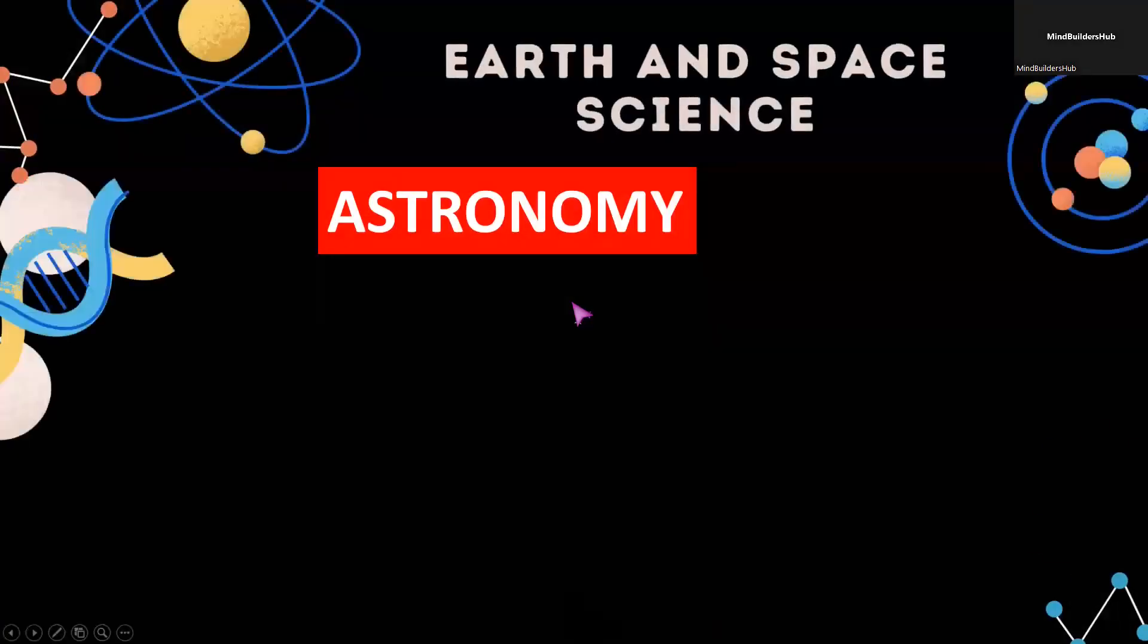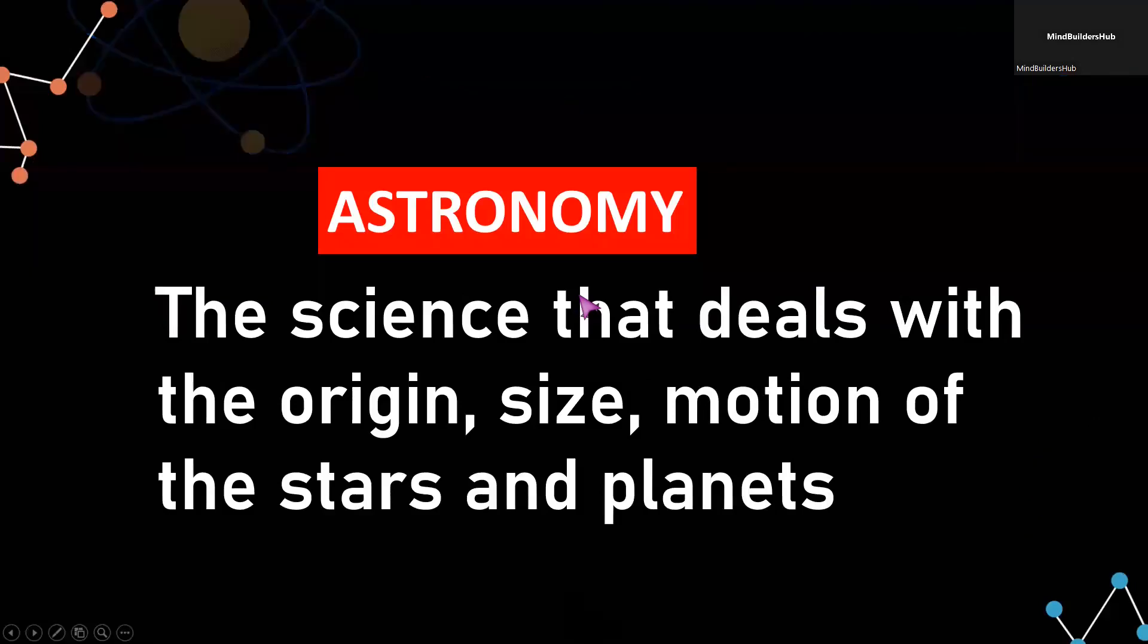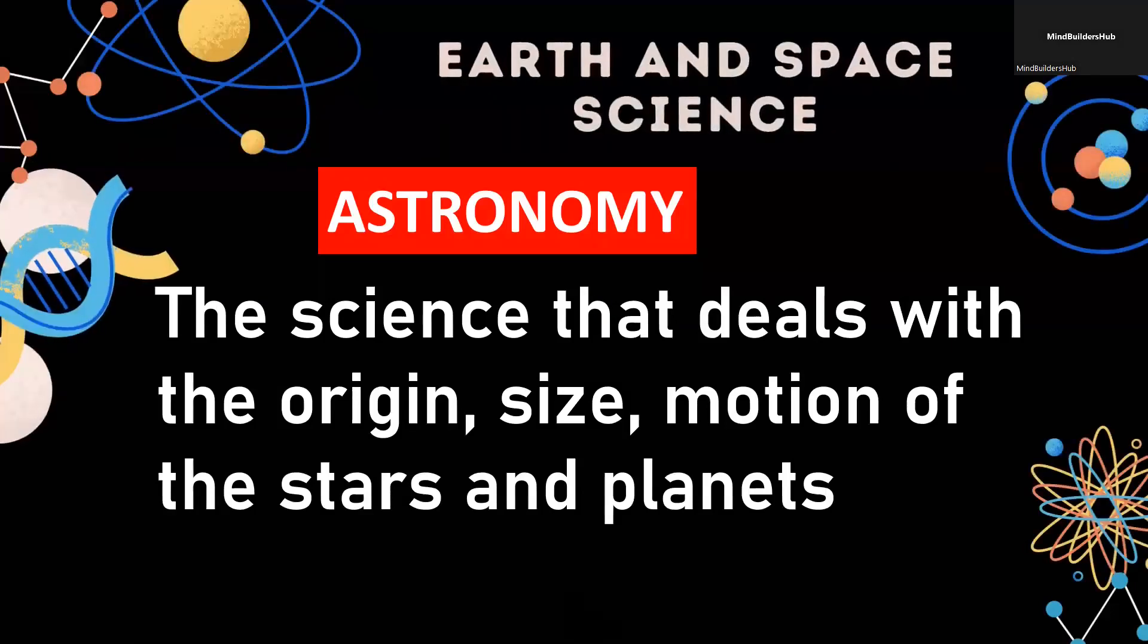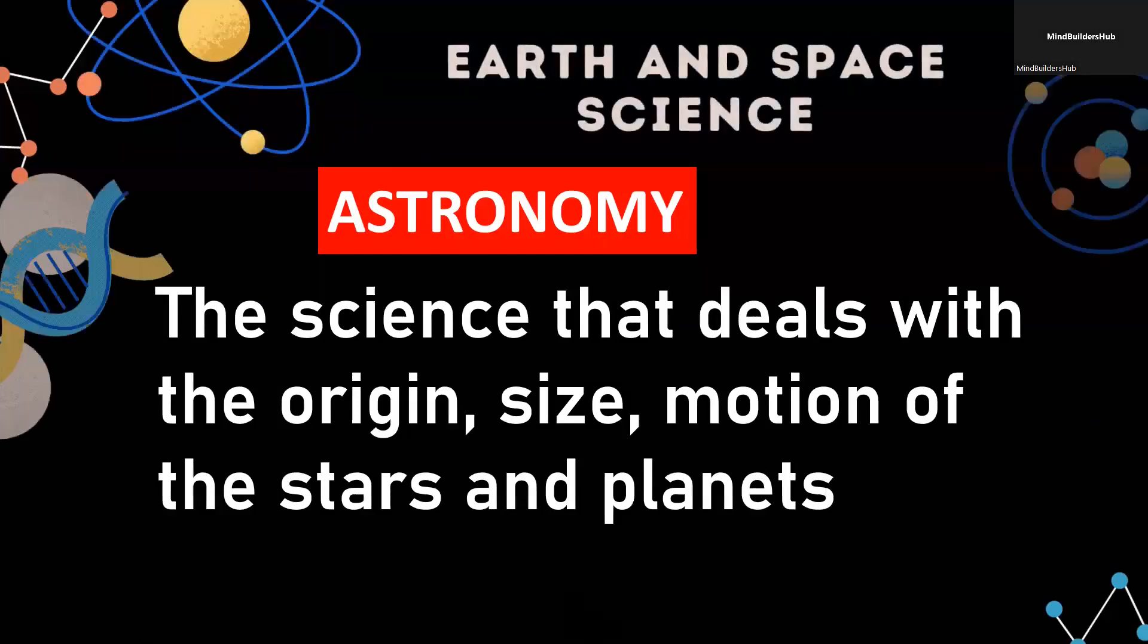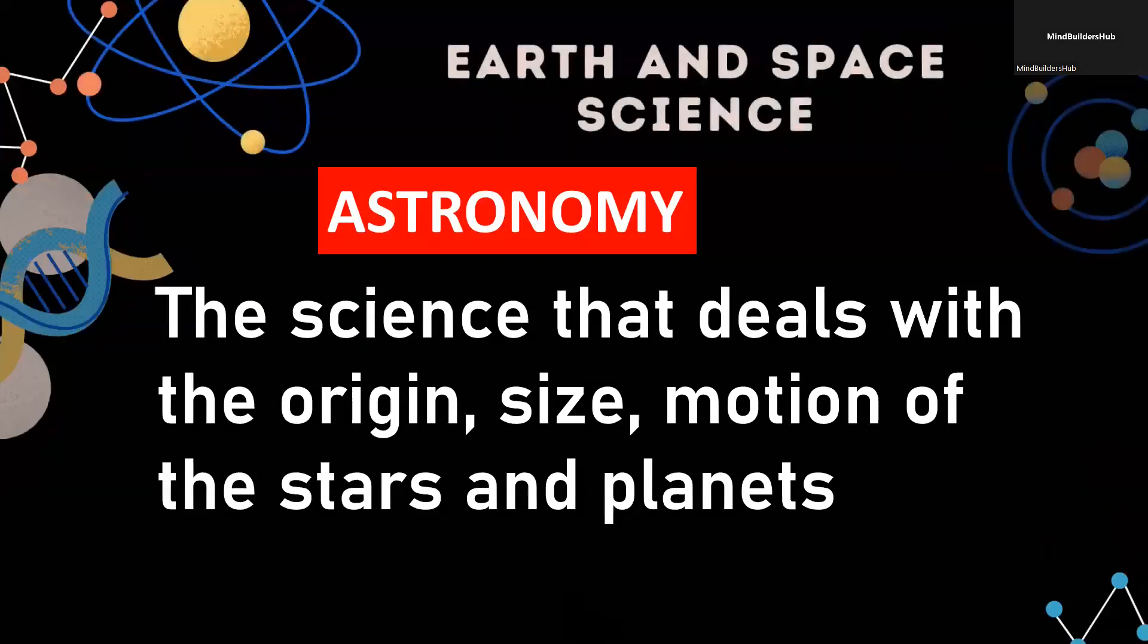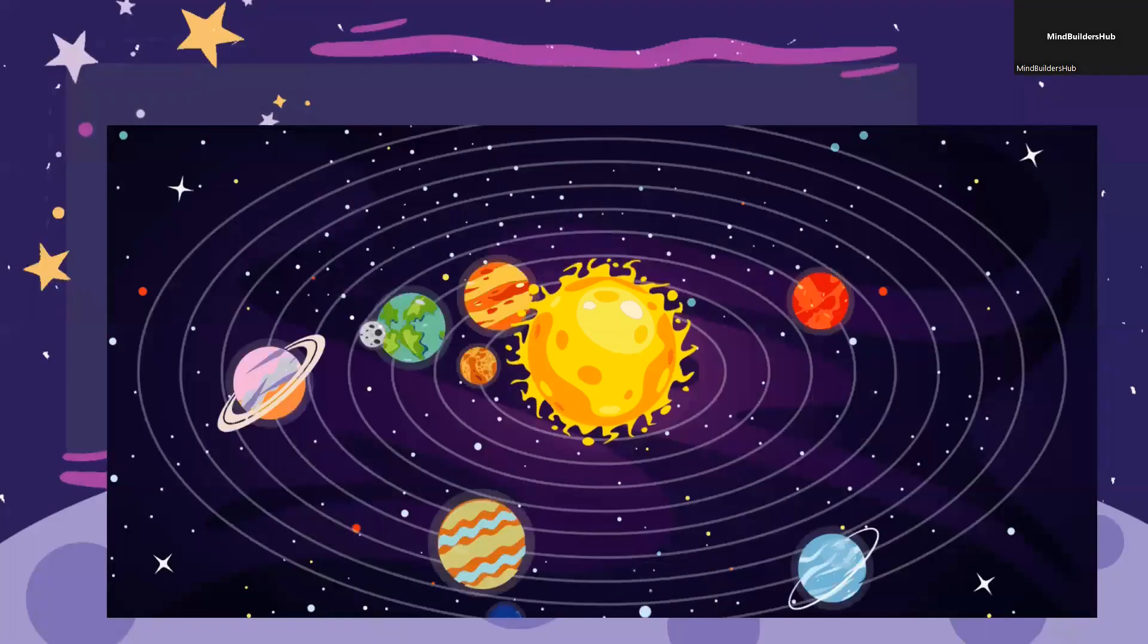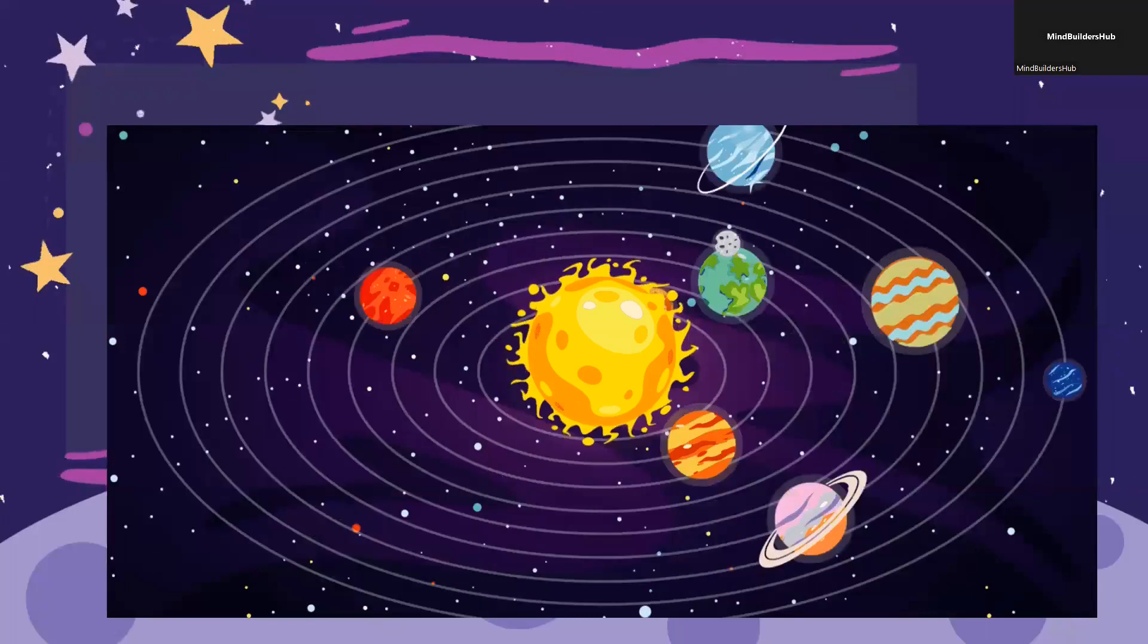Aside from geology, we have astronomy and the scope of the study deals with the origin, the size, the motion of the stars, and even the planets. Those are the major things that we can find in our solar system or even in our space. So in here, we're going to deal with the planets, sun is a star, different stars that can be found in our universe.